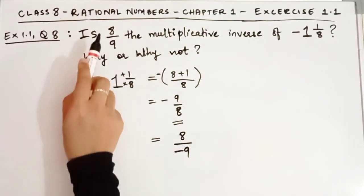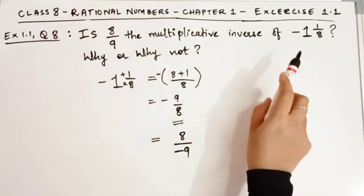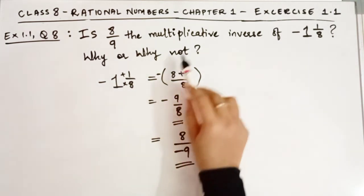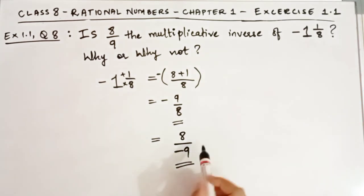We were asked if 8/9 is the multiplicative inverse of this number. Clearly it is not the multiplicative inverse of -1 1/8 because -8/9 is the multiplicative inverse. Hence, 8/9 is not the multiplicative inverse.